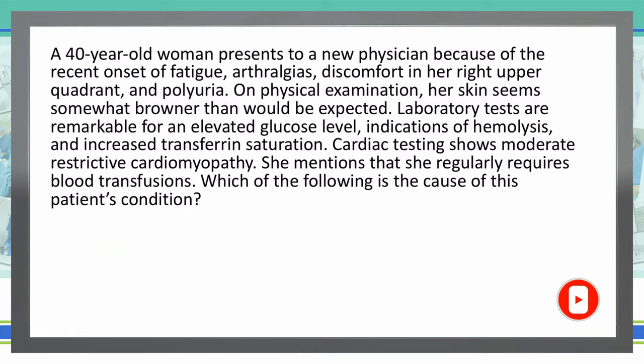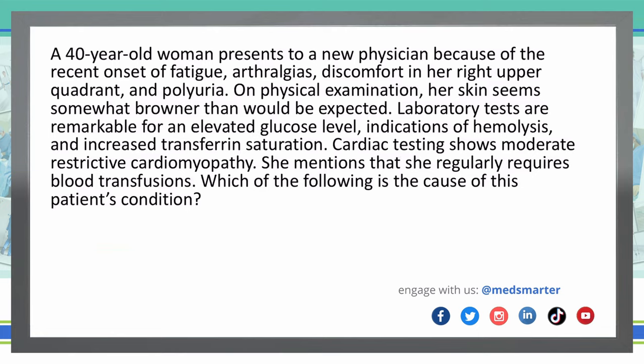Which of the following is the cause of this patient's condition? A 40-year-old woman presents to a new physician because of the recent onset of fatigue, arthralgias, discomfort in her right upper quadrant, and polyuria. On physical examination, her skin seems somewhat browner than would be expected. Lab tests are remarkable for an elevated glucose level, indications of hemolysis, and increased transferrin saturation. Cardiac testing shows moderate restrictive cardiomyopathy. She mentions that she regularly requires blood transfusions. Which of the following is the cause of this patient's condition?